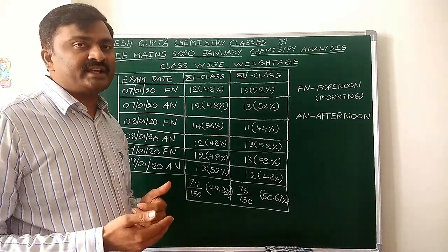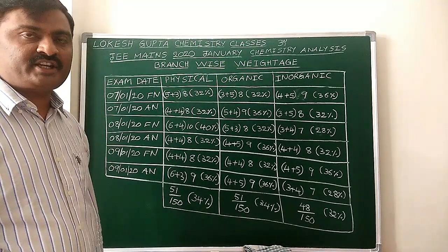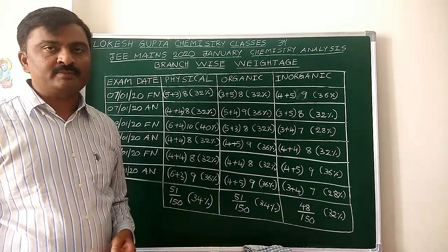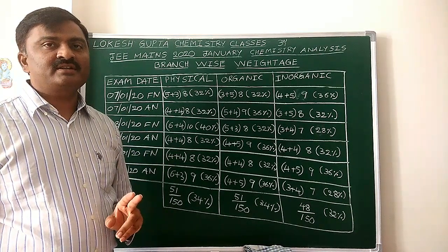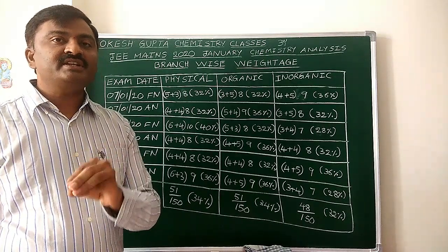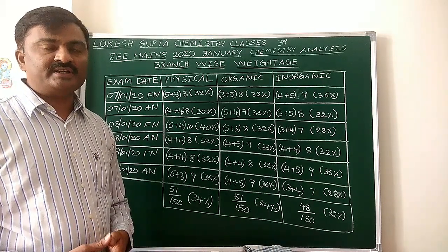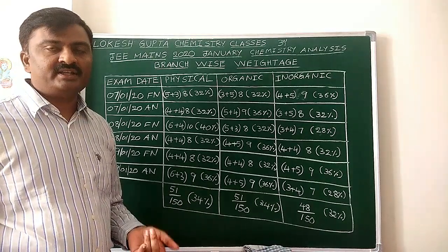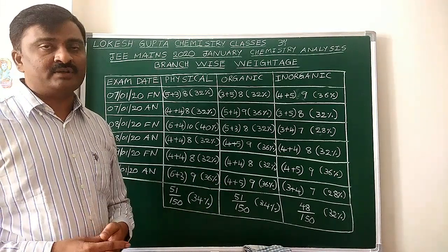Now I am going to give another analysis — branch-wise weightage. In chemistry, 3 branches are there: Inorganic Chemistry, Organic Chemistry, and Physical Chemistry. General chemistry also has 2 chapters: Environmental Chemistry and Chemistry in Everyday Life. Environmental Chemistry I take under Inorganic, and Chemistry in Everyday Life I take under Organic. For which branch do they give more weightage? Out of 25 questions divided by 3 gives 8.33, so they have to give 8, 8, 9 — that is equal weightage.